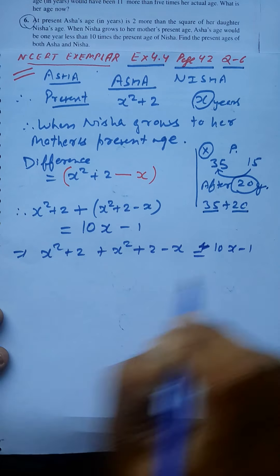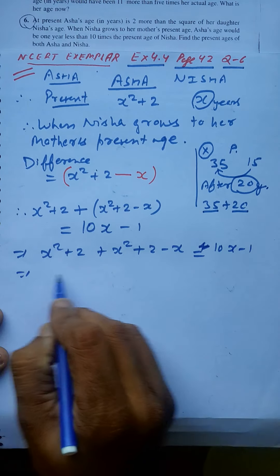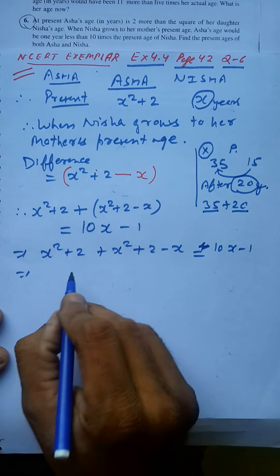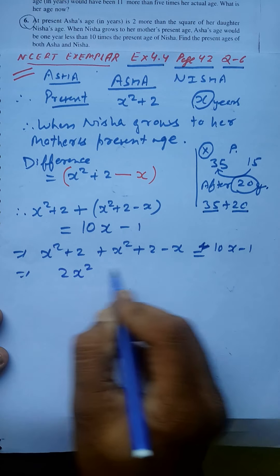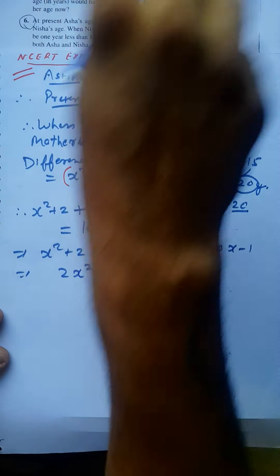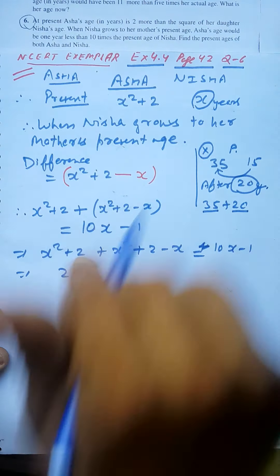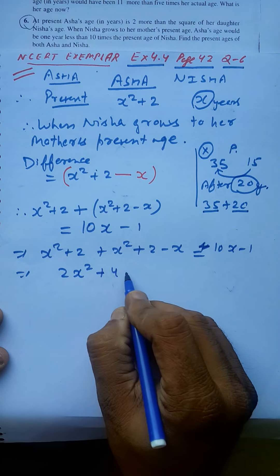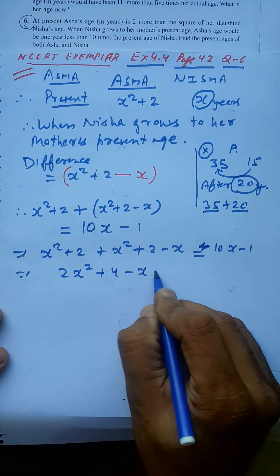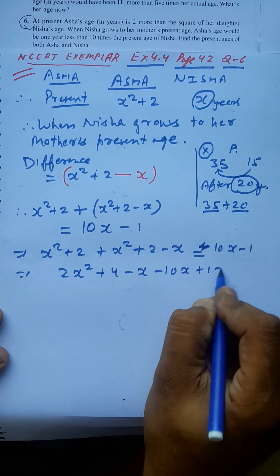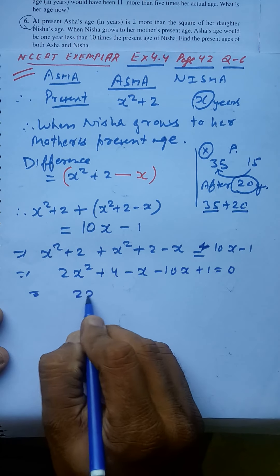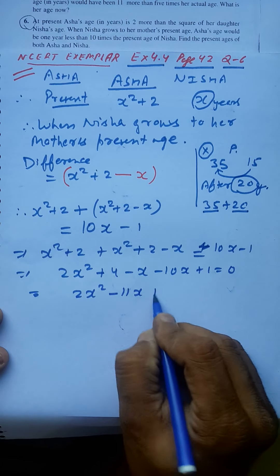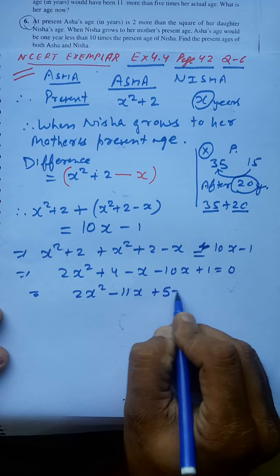Take it easy, friends — this question is quite easy, only the language is a slight obstacle. Simplifying: 2x squared plus 4 minus x minus 10x plus 1 gives us 2x squared minus 11x plus 5 equals 0.